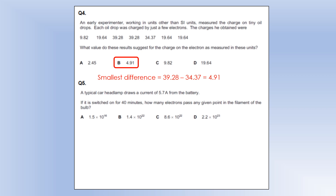A typical car headlamp draws a current of 5.7 amps from the battery, switched on for 40 minutes. How many electrons pass through a given point in the filament bulb? Using the integral of current with respect to time, converting minutes into seconds gives our charge in coulombs, and dividing by the charge of one electron gives the number of electrons.